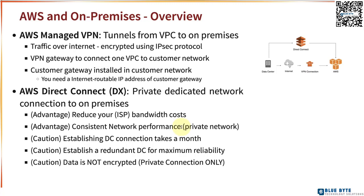Another thing to remember is that Direct Connect is a private connection only — the data on it is not encrypted by the network. In this step, we looked at two options to set up hybrid cloud in AWS: AWS Managed VPN and AWS Direct Connect.